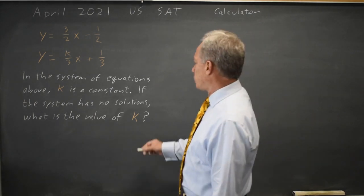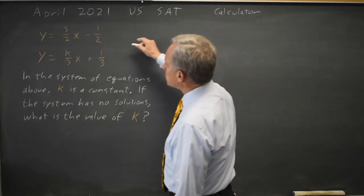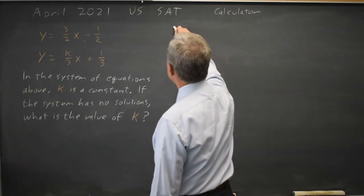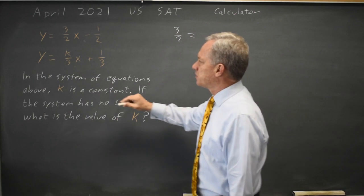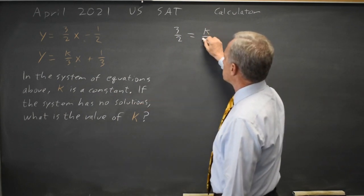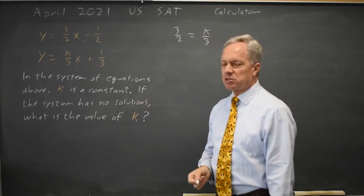I set the two slopes equal. The slope of the first equation is 3 halves and the slope of the second equation, the x coefficient, is k over 3. They're asking me to solve for k.